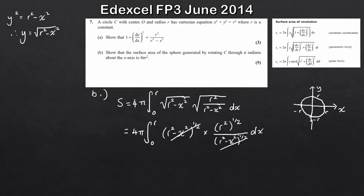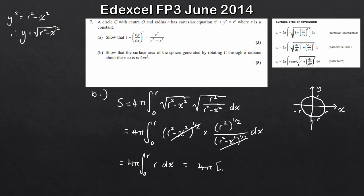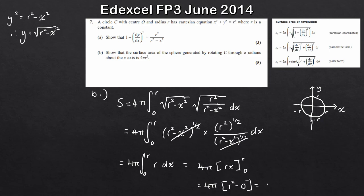So the integral simplifies to 4π ∫₀^r r dx. Since r is a constant, integrating gives rx, evaluated from 0 to r. Plugging in: 4π × [r·r − r·0] = 4π × r² = 4πr², as required.